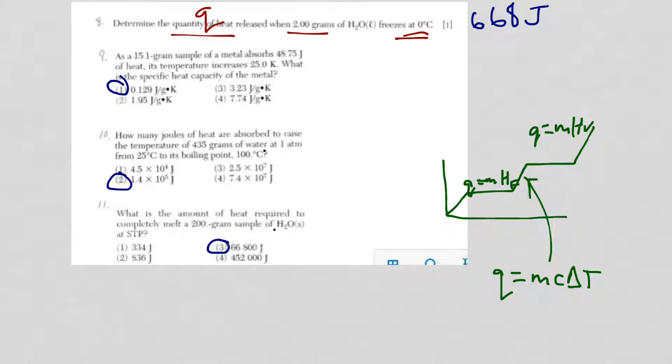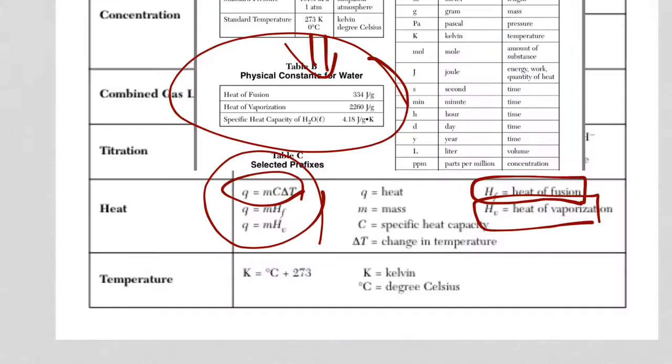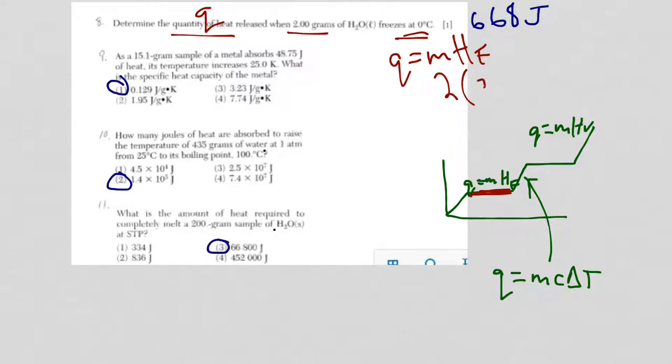Okay, so for this problem, heat of fusion is here. Melting or freezing, solid to liquid, liquid to gas. So I need Q equals MHF. And the mass is 2. And from the reference table, the heat of fusion for water, 334. So 334 joules per gram, and that's where the 668 joules comes from.